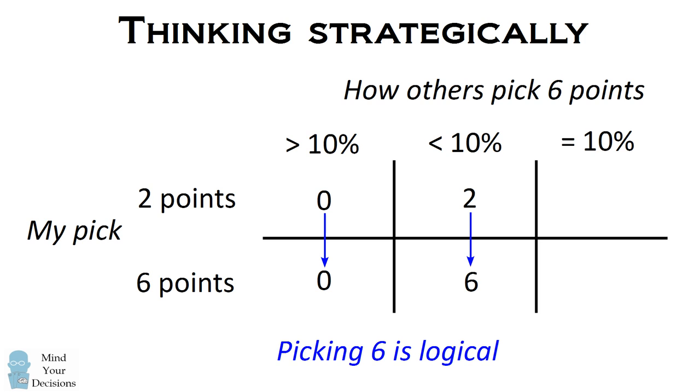Now there is one third case to consider: maybe exactly 10% pick 6. In this case, you would get 2 if you pick 2, but you would ruin it for everyone and get 0 if you pick 6. So in this one small scenario, you are actually better off picking 2 points. But it is kind of rare, and there is no way you can know that exactly 10% of the class is picking 6. This is a very unlikely scenario. So you can disregard this third possibility, and you could say picking 6 is a logical thing to do.